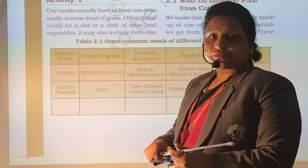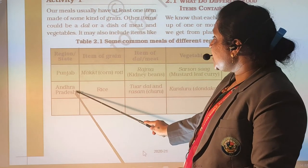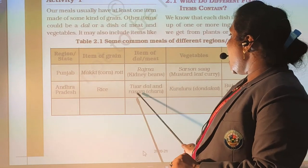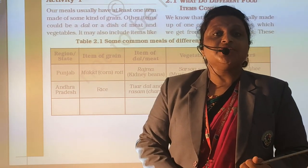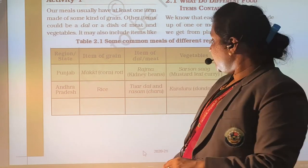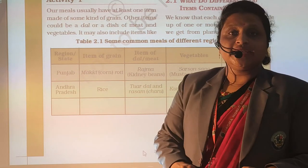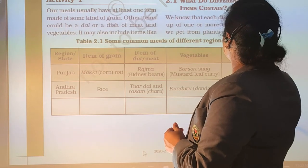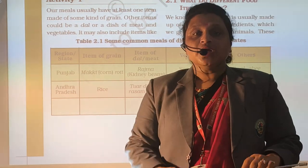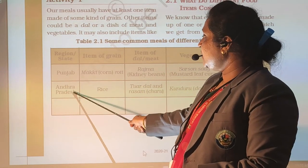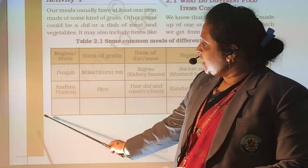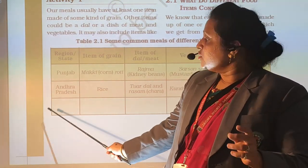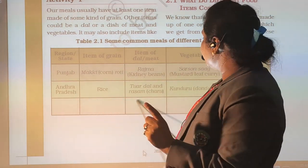Next is the Andhra Pradesh entry. They love to eat rice. With rice they eat toovar dal and rasam. The vegetable they take is gongura — a special vegetable they eat with rice. With their meal, they also use buttermilk and ghee. So these are the specialties of Punjab and Andhra Pradesh. Students, next you have to write the entry for Gujarat and fill in the remaining columns.